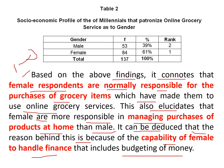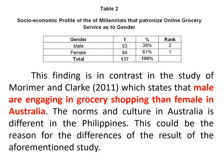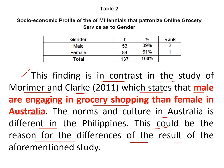The third paragraph involves citing a related literature or study related to the findings. For example: This finding is in contrast with the study of Marimer and Car (2011), which states that males are more engaged in grocery shopping than females in Australia. The norms and culture in Australia differ from those in the Philippines, which could be the reason for the differences in results. That completes the three-paragraph structure for the first example.